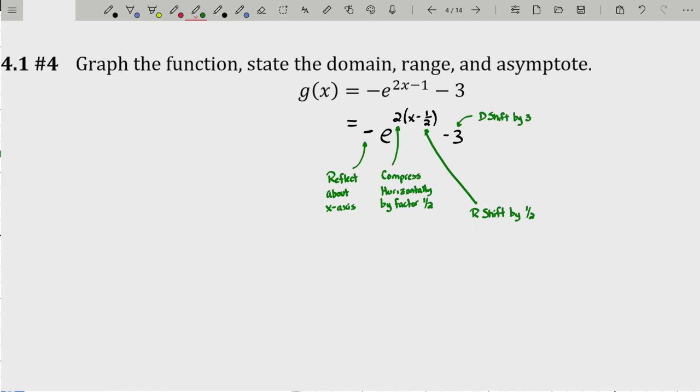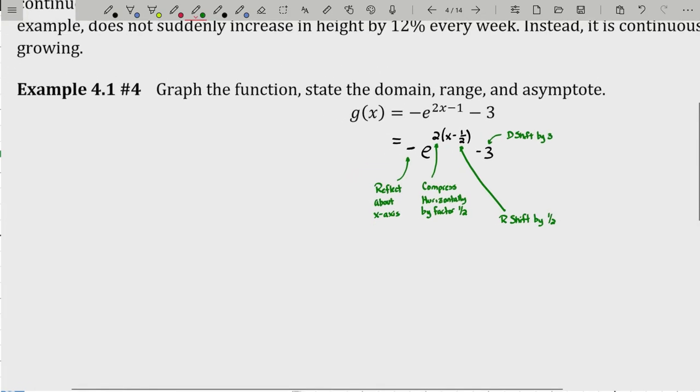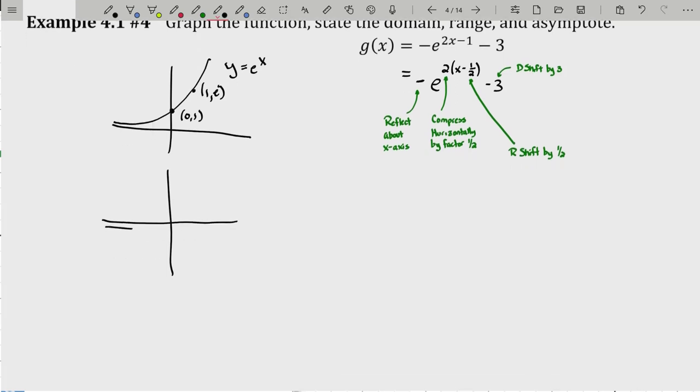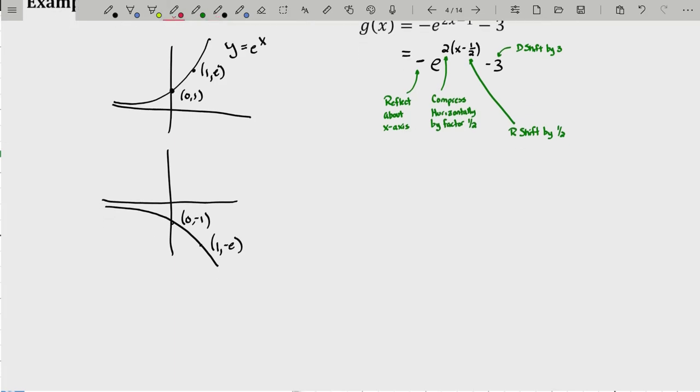First, note the exponential base e is greater than 1, so this function is initially growing: y = e^x goes through (0, 1) and (1, e). Now we reflect it, giving us (0, -1) and (1, -e). Note there is a horizontal asymptote in both cases. I'm not super concerned about being rigid with my graphing right now; I'll reserve that for the final step.